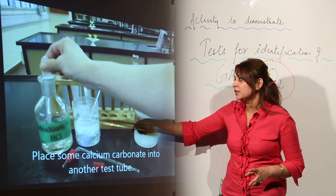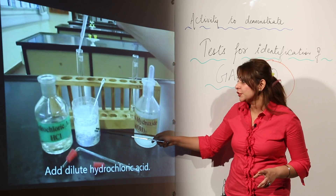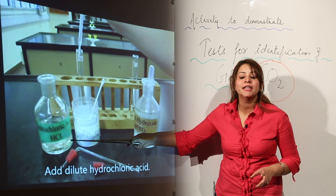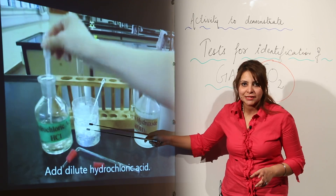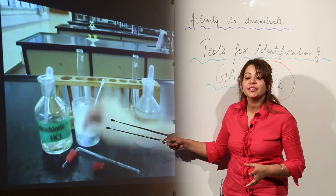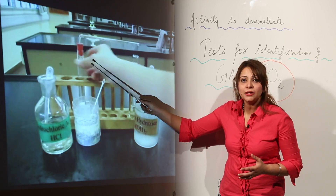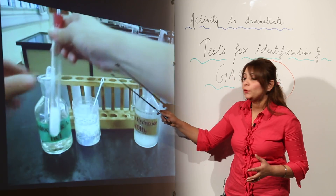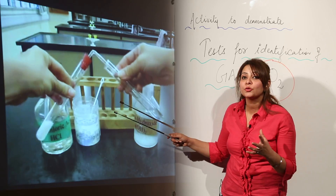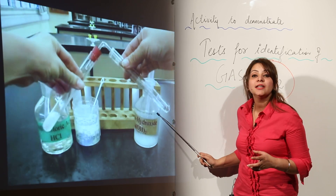What we are doing is adding calcium carbonate and mixing it with dilute HCl, because calcium carbonate when it reacts with HCl it liberates carbon dioxide gas. We are fixing the funnel so that we can collect the carbon dioxide gas and supply it to the next test tube.